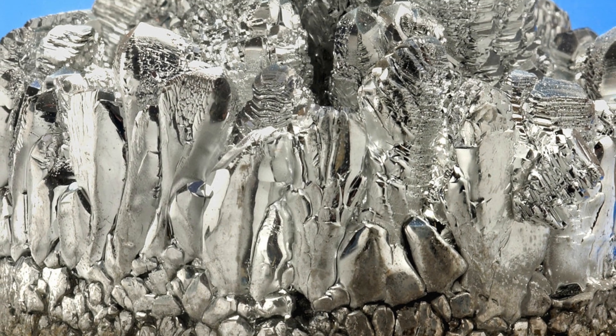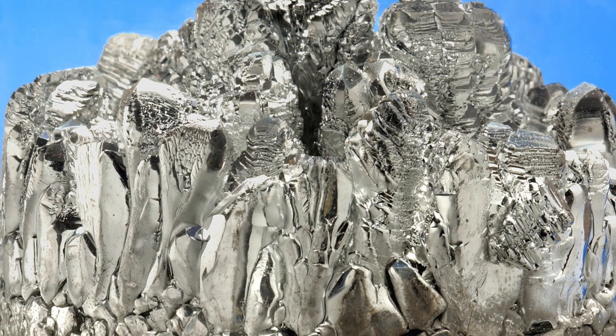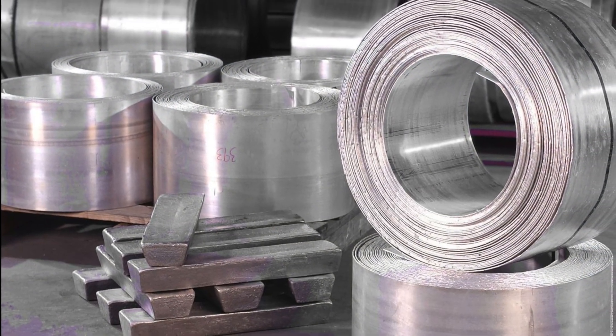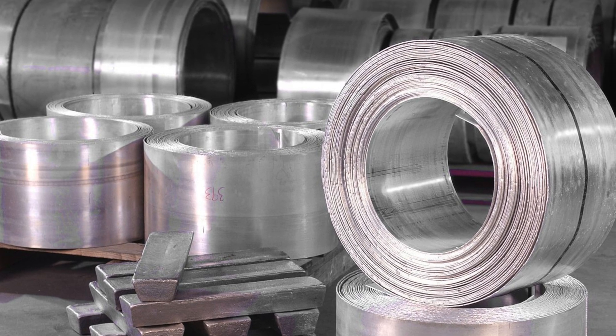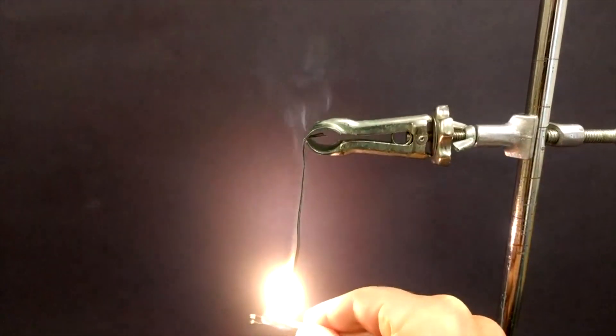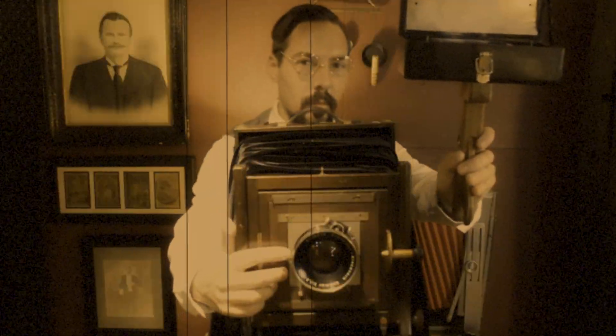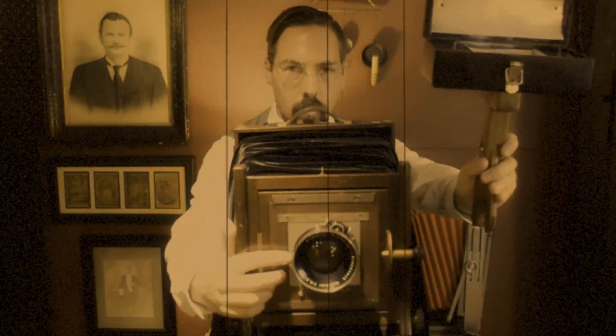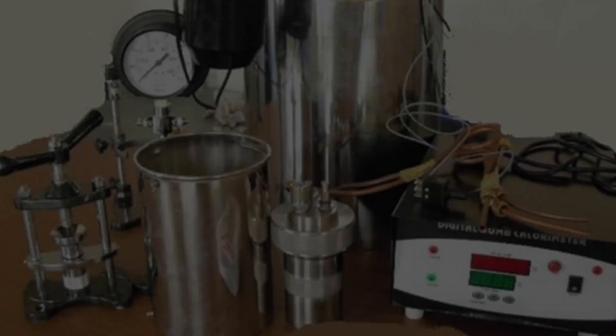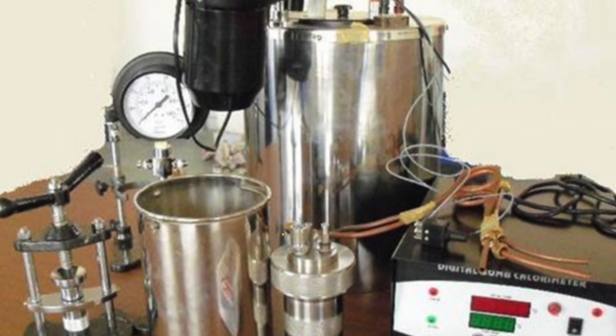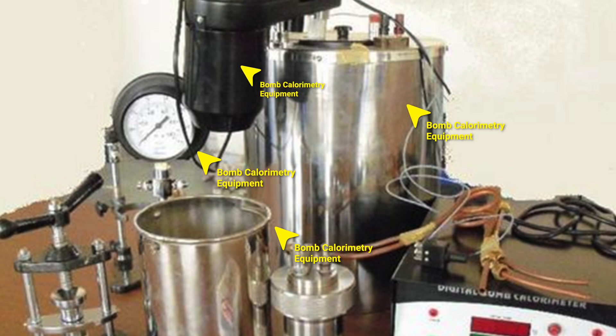Magnesium occurs naturally only in combination with other elements. Elemental magnesium metal, shown here, is produced artificially. It is highly reactive and can burn with a characteristic brilliant white light, a useful property in the early days of flash photography. To measure the enthalpy of combustion in this highly exothermic reaction would typically require the use of a bomb calorimeter.